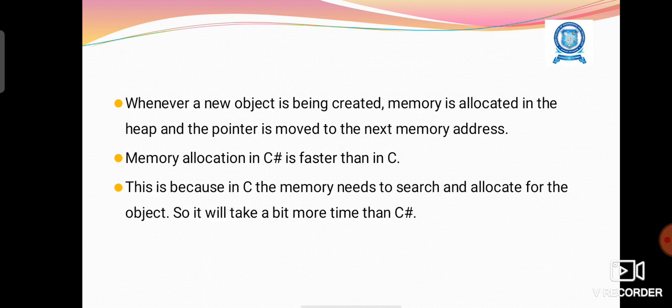Whenever a new object is being created, memory is allocated in the heap and the pointer is moved to the next memory address. Memory allocation in C# is faster than in C, because in C the memory needs to be searched and allocated for the object, so it takes a bit more time than C#.